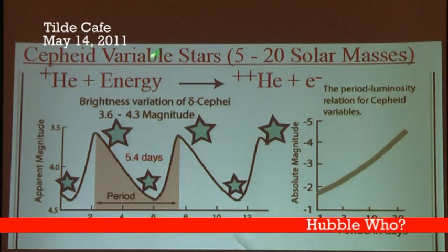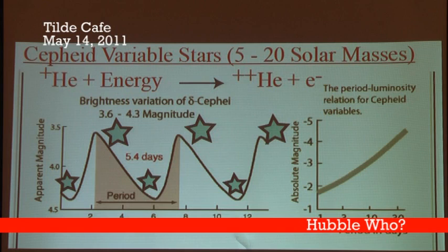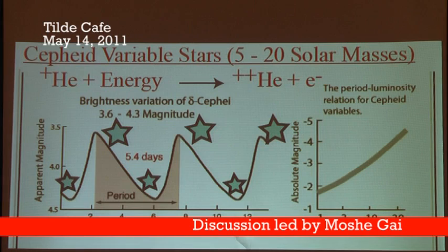There are certain stars which we call the Cepheid variable stars. They are very large stars — 5 to 10 times as massive as the sun. And those stars go from dim to bright to dim to bright, forever and ever. They do this in a cycle.